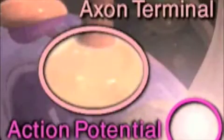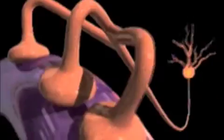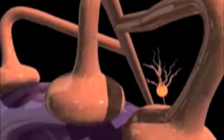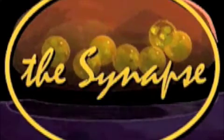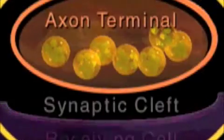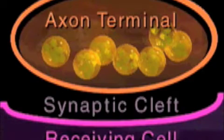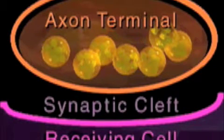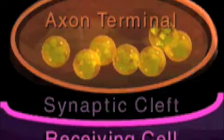This is a representation of a cholinergic synapse. Cholinergic synapses use the neurotransmitter acetylcholine, which is abbreviated as ACH. In this cross-section of a synapse, we can see the three components of a typical synapse: the axon terminal, the synaptic cleft, and the receiving or post-synaptic cell.